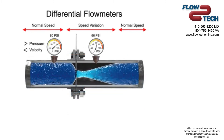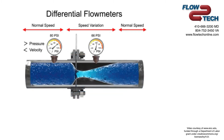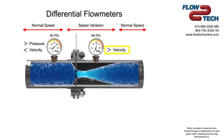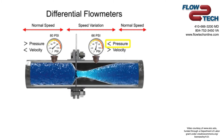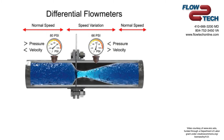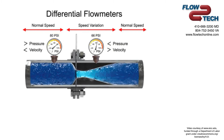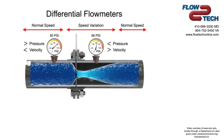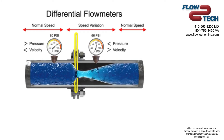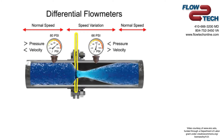Applying Bernoulli's principle, the increased fluid velocity results in a decrease in pressure. As the fluid flow rate increases through the pipe, back pressure on the incoming side increases due to the restriction of flow created by the orifice plate.